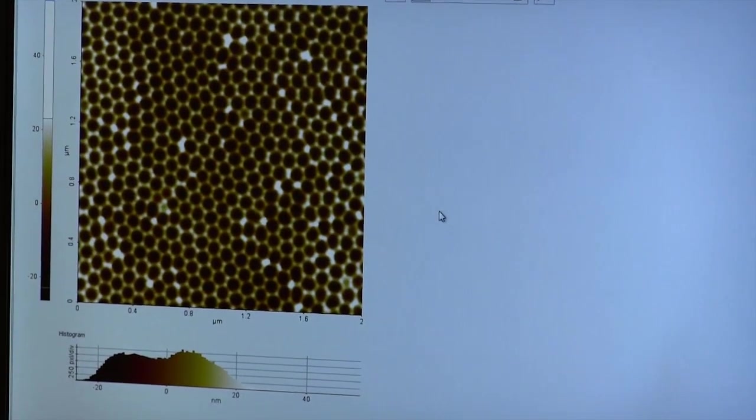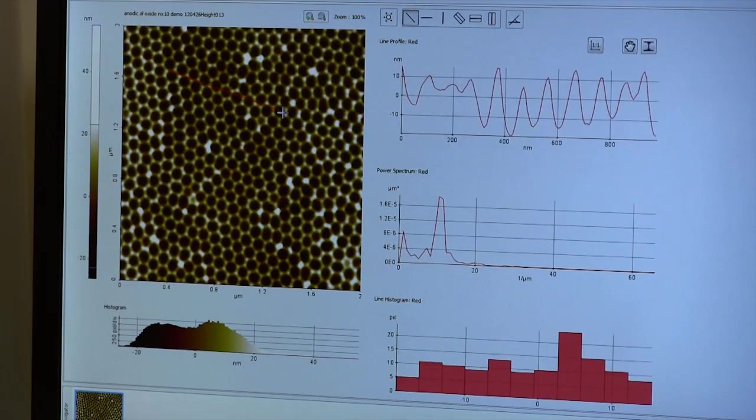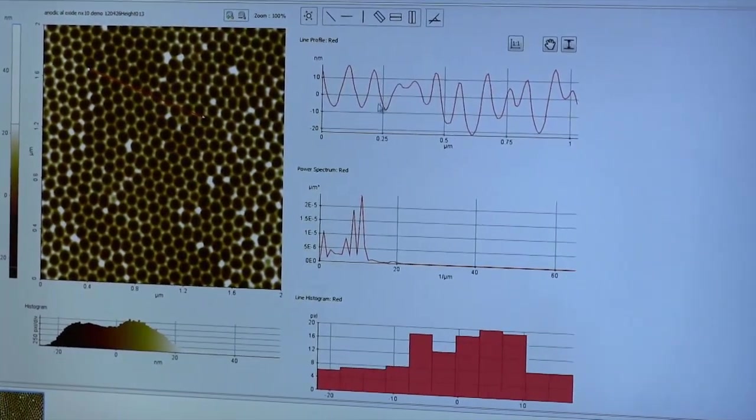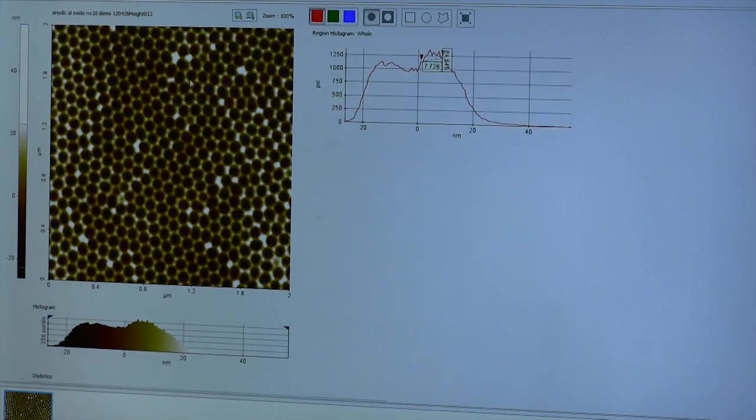A few ways to measure this are to draw a line and look at a height profile along that line, or use the automated grain detect feature to count the pores and give statistics about average length and area. These are just a few ways to take quick, easy measurements in the Park image analysis software.